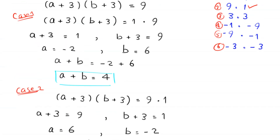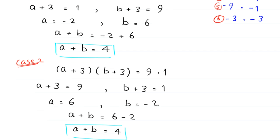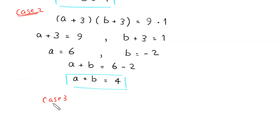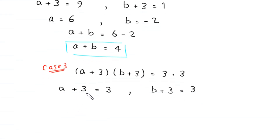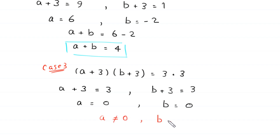In case 3, which is 3 times 3, we write (a plus 3)(b plus 3) equal to 3 times 3. So a plus 3 equals 3, giving a equal to 0, and b plus 3 equals 3, giving b equal to 0. Since a and b are in the denominators, a cannot equal 0 and b cannot equal 0, so both values are rejected.